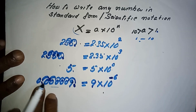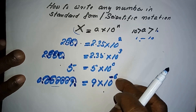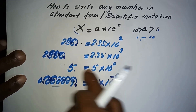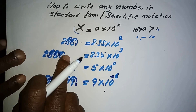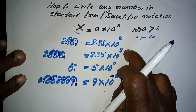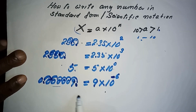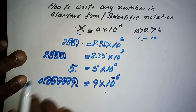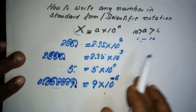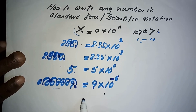The index is 6, but it is negative. Please note: when you are moving the decimal to the right, the index is negative. When you are moving to the left, the index is positive. This is how you turn any number into standard form or scientific notation.